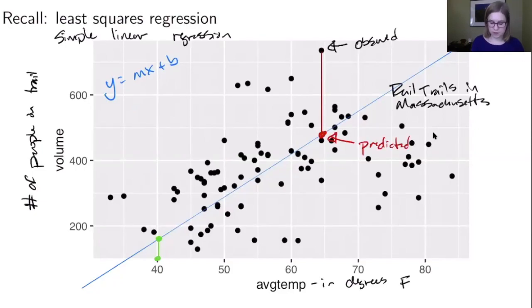We could go down to the line, and that would be our predicted value. Then the difference between these two things is the residual, which we often denote with ε.